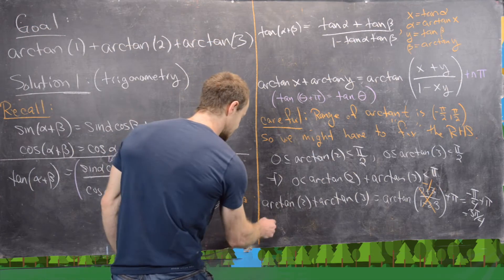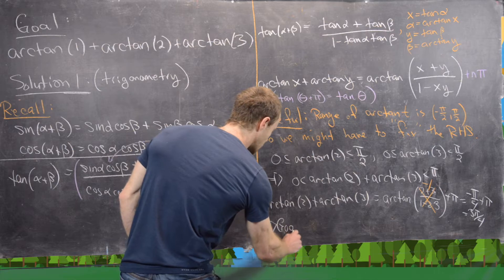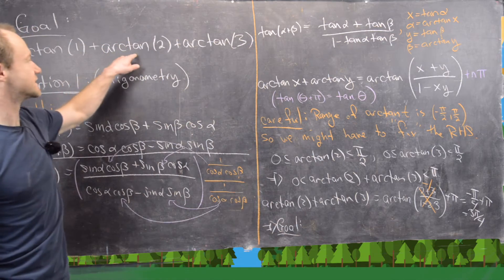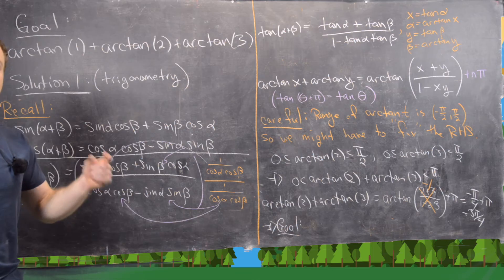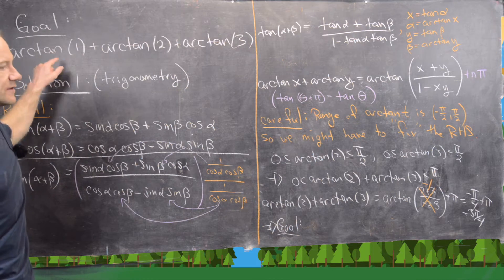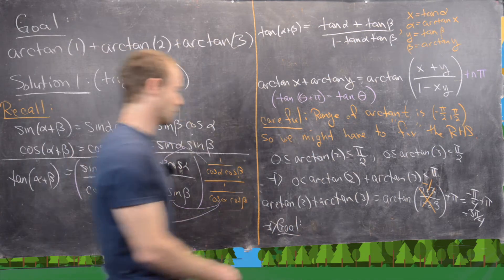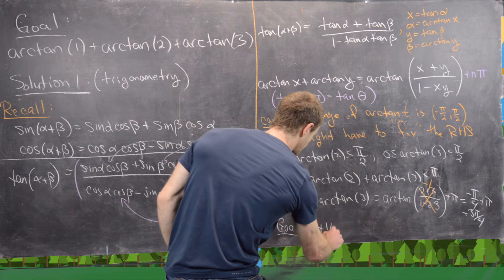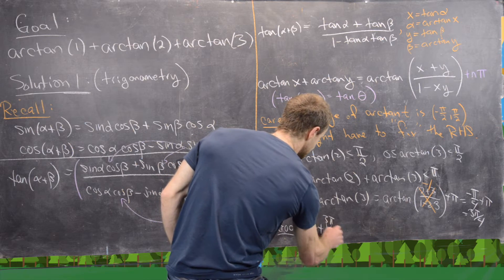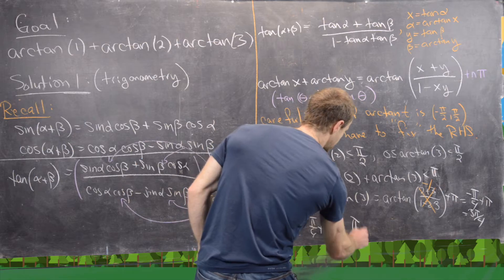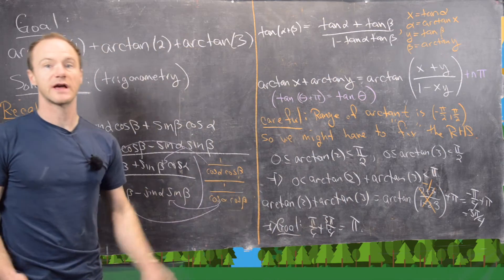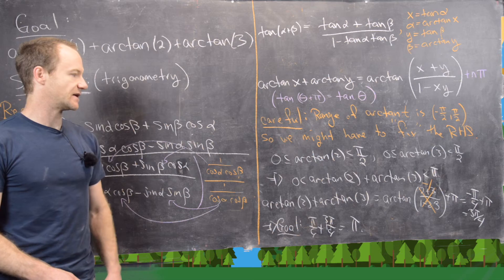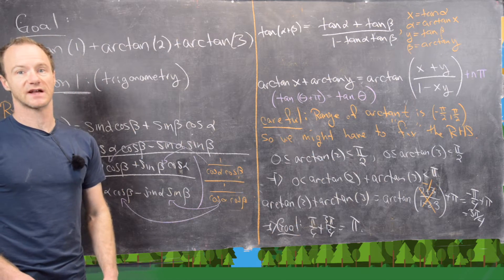So arctan of 2 plus arctan of 3 equals 3 pi over 4. That tells us our goal — arctan of 1 plus arctan of 2 plus arctan of 3 — equals pi, because arctan of 1 is pi over 4, and pi over 4 plus 3 pi over 4 equals pi. We've solved it one way; now let's look at the second solution using complex numbers.